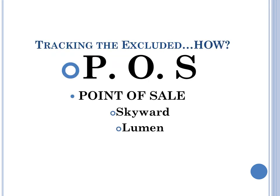How do we track the excluded? In the easiest format, we look at the point of sale used in the schools. Skyward and Lumen are two software programs that easily provide the information that relates to the non-program foods. These are two software programs that can be a cost to the district. We cannot require a district to use any form of software for these purposes.